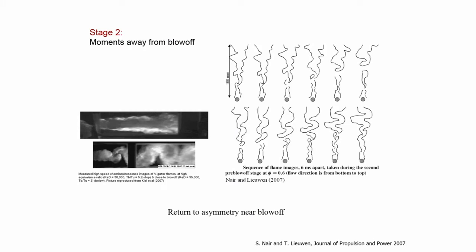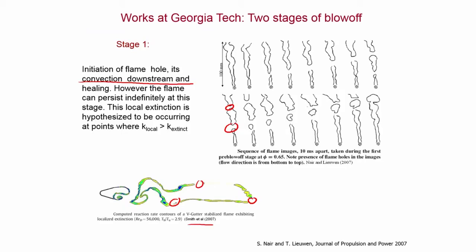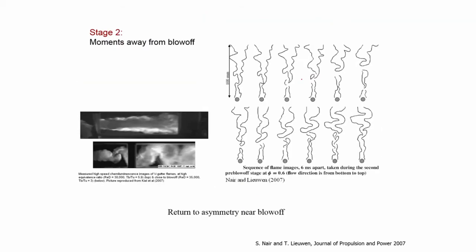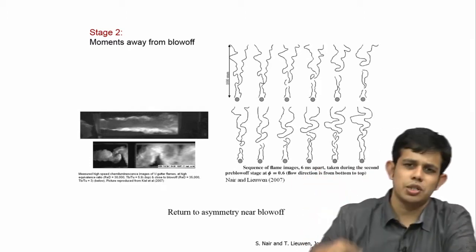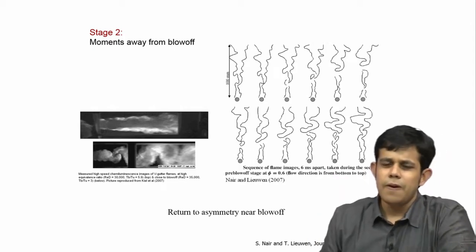Stage 2 is just before blow-off: even when the flame hole is created, the flame is still symmetric in shape and does not have a very large change in large-scale structures. But right before blow-off, the flame essentially loses its symmetry and takes a more sinuous shape, where the large-scale structure of the flame is distorted.